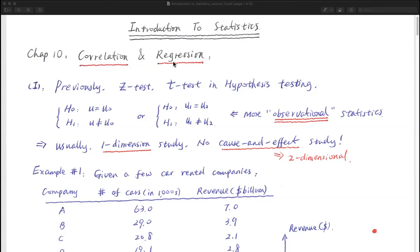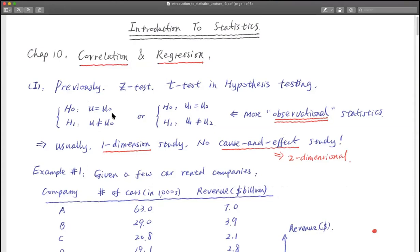If you remember previously, what we did — either we are using z-test or t-test in hypothesis testing. We are trying to compare: is the average equal to some number, or do the two samples have the same average? So what we talk about a lot here is about average. That's one-dimensional study — comparing whether the overall population average is equal to some value. So in one-dimensional study, there is no cause and effect study.